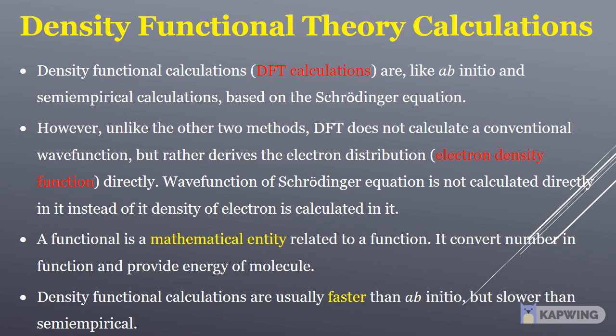Density functional calculations are usually faster than Ab initio, but slower than semi-empirical.